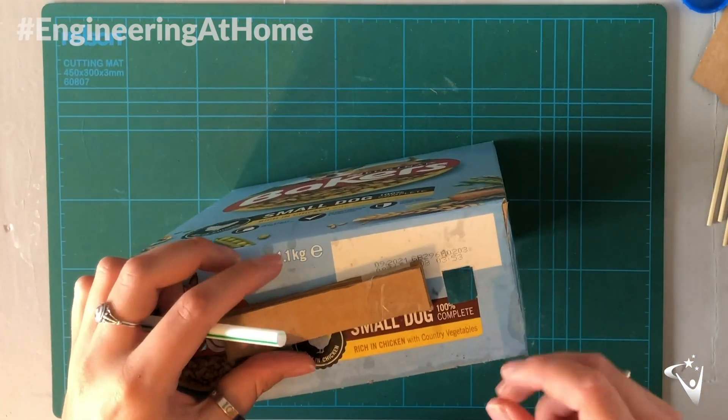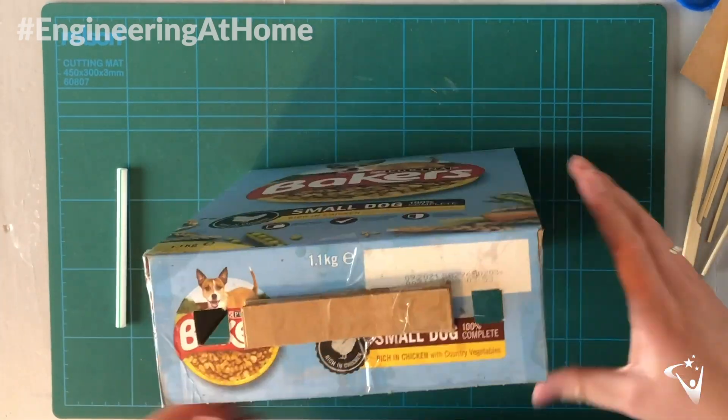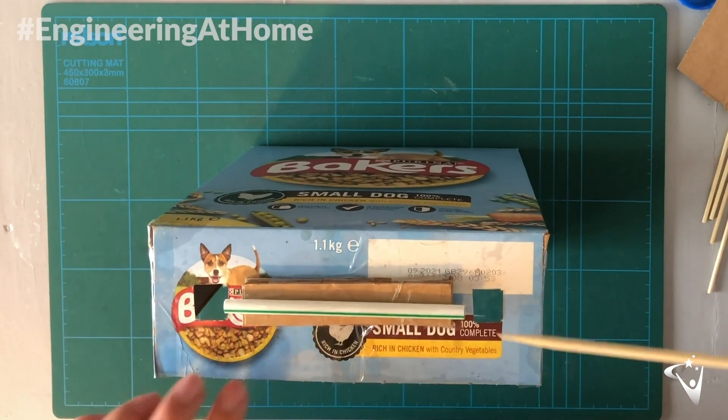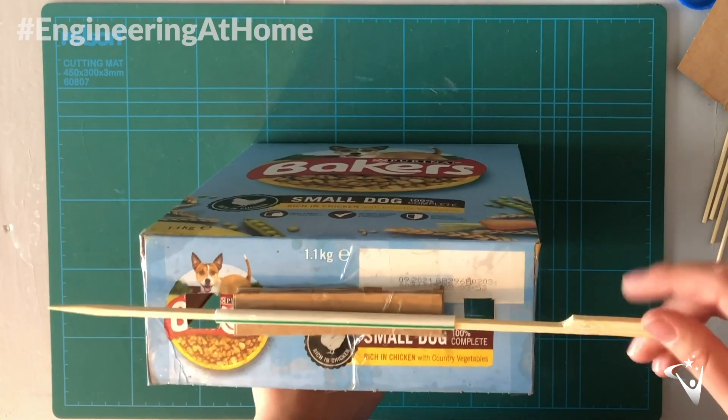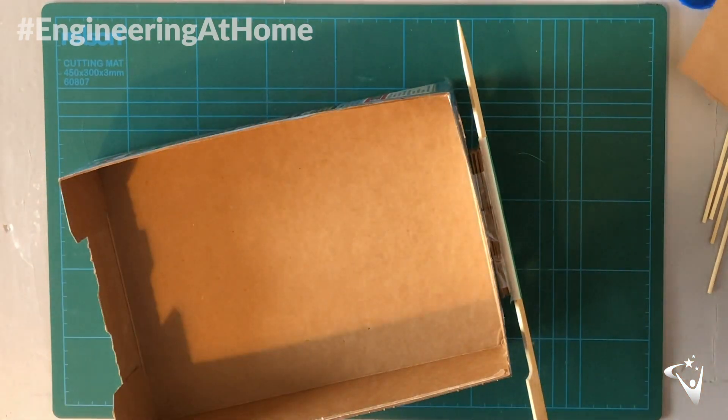So stick these together and then we can stick it to the top of the box in between the two windows. Now when you put the bamboo skewer through you should find it spins nicely without hitting the top of the box. This will also leave space for the string to wind around.